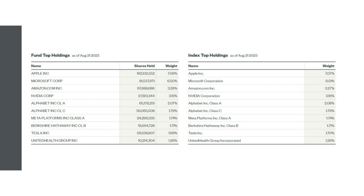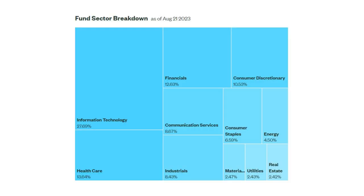What you notice right off is that SPY is very tech-heavy — these are the top weightings. Looking at the sector breakdown, there's nearly 28% in information technology, followed by health care, then financials and consumer discretionary. So you're taking a pretty tech-heavy bet when investing in SPY.